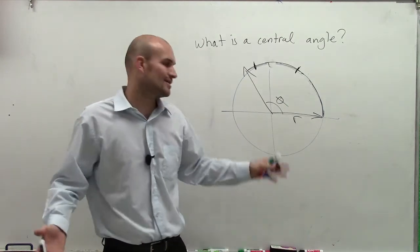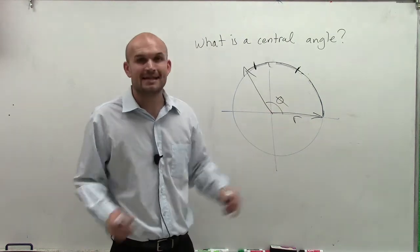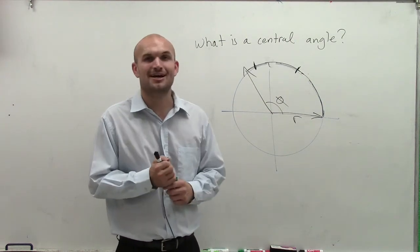So just remember, a central angle is whenever you have an angle with the vertex at the center of your circle. So there's a central angle. Hope that helped you out. Thanks.